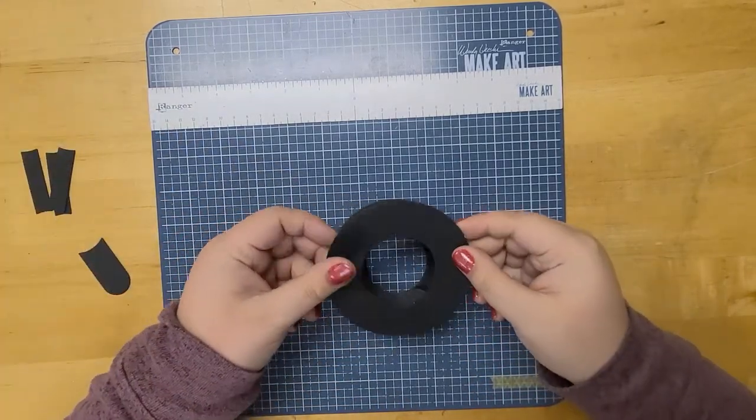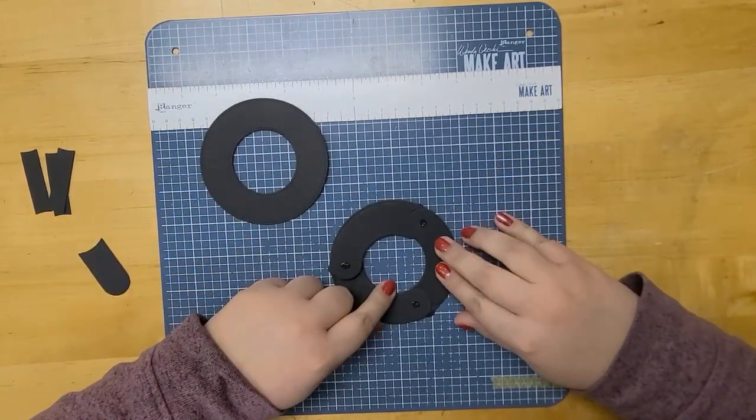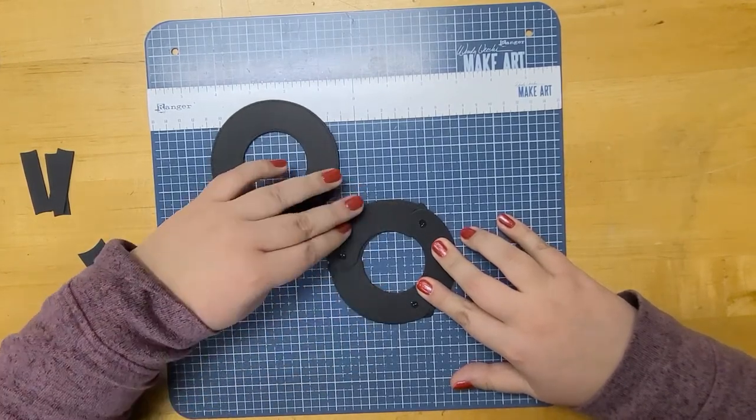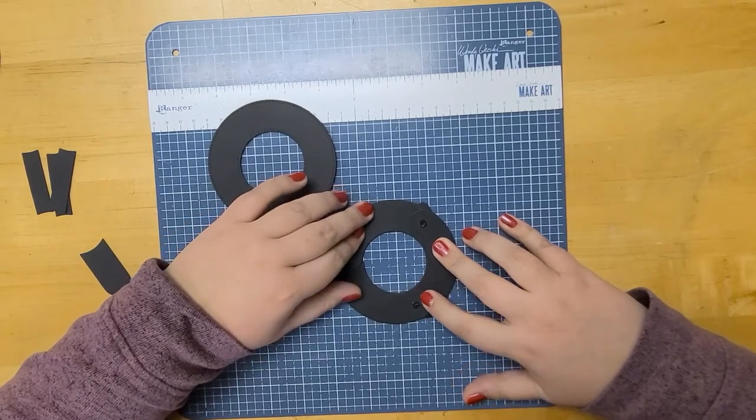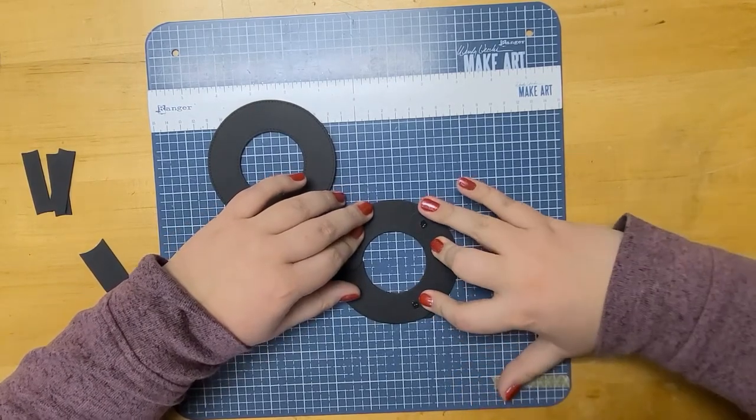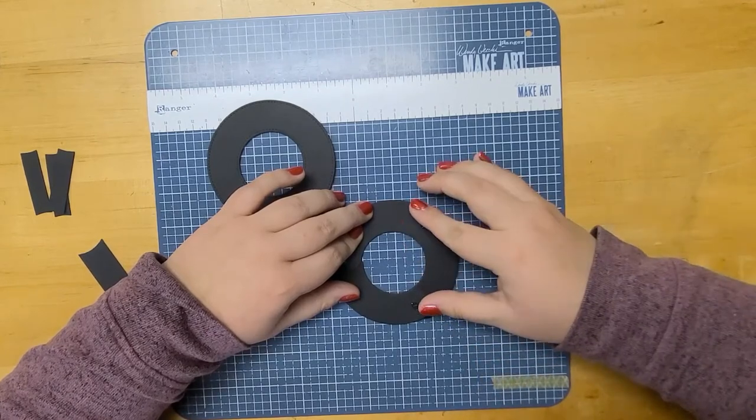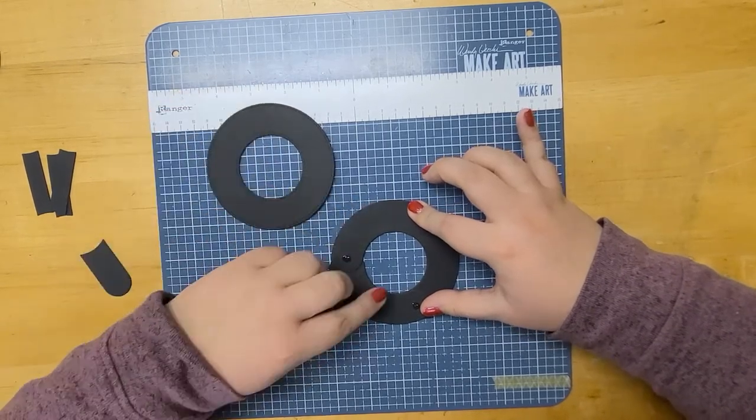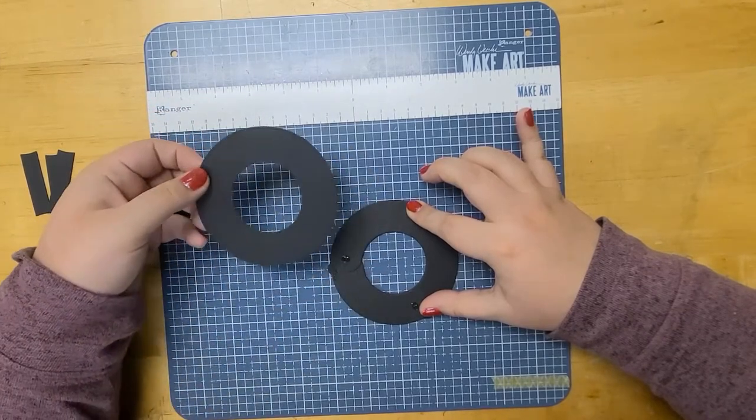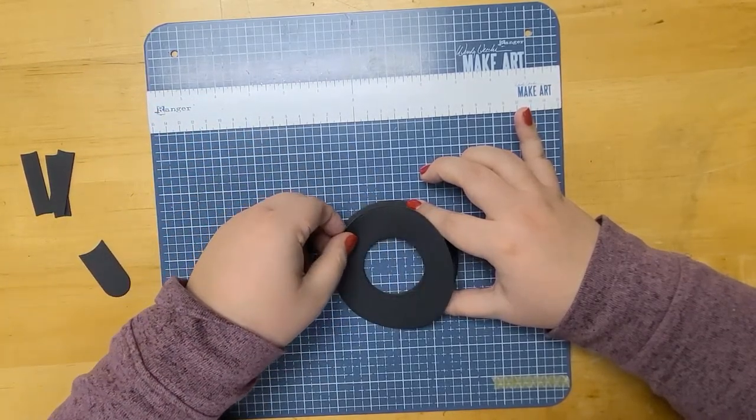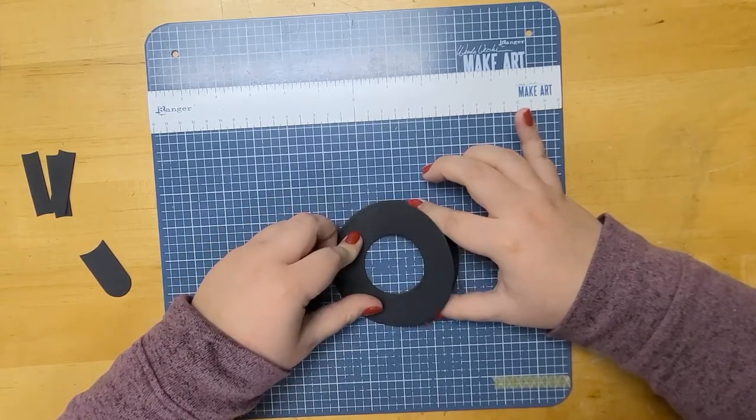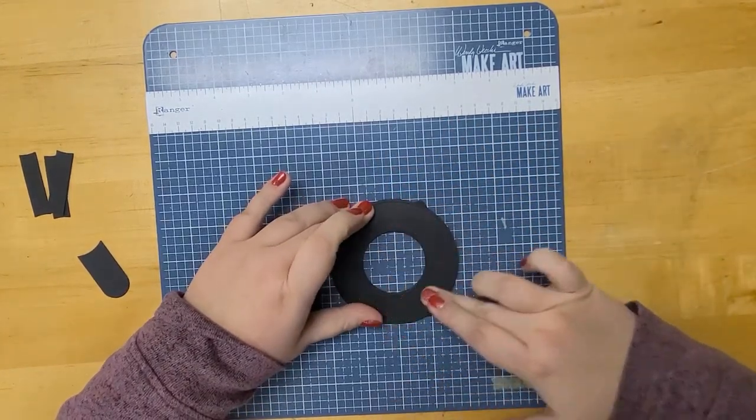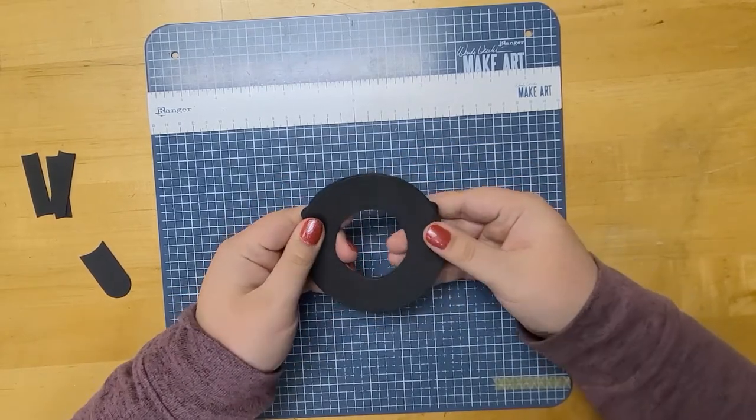So now we're going to take one of the plain rings here. And once we have these sausages situated to where they are perfectly lined up with that inner ring, I'm going to hold it in place here as best I can with one hand. And I'm going to take this plain ring right on top. So the only thing that's going to be holding this all together are those three little glue dots.